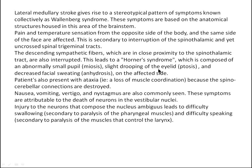Additional features of Wallenberg syndrome include Horner syndrome — because upper sympathetic fibers travel very close to the spinothalamic tract — causing miosis, ptosis, and anhidrosis. You get ataxia from disruption of the spinocerebellar connections. Vertigo, dizziness, and eye problems arise from disruption of the vestibular nuclei near the inferior cerebellar peduncle. And destruction of the nucleus ambiguus results in problems with talking and swallowing.